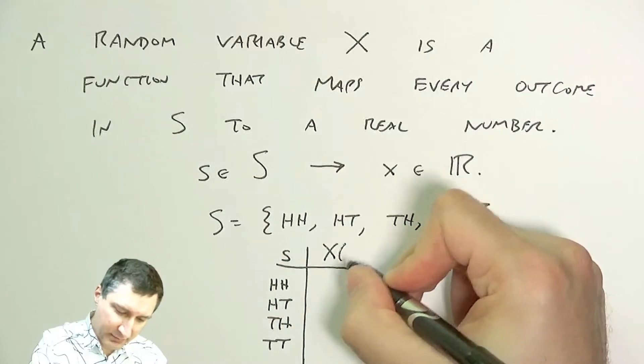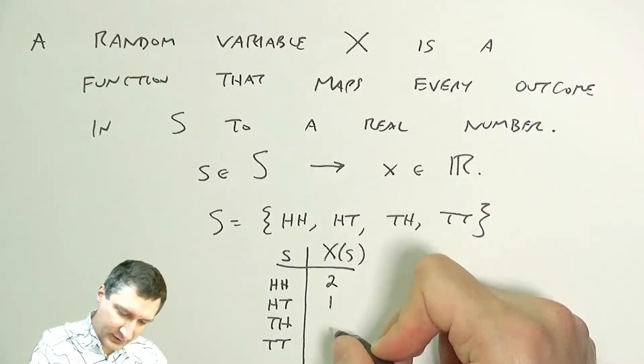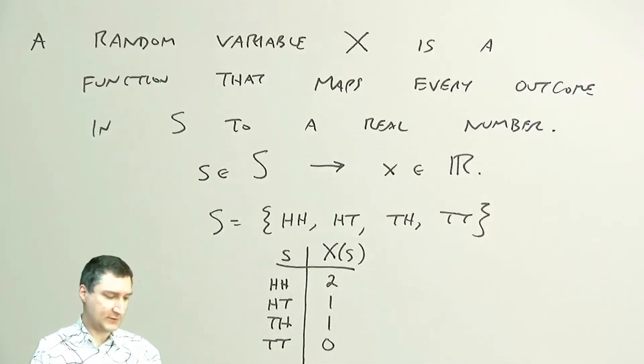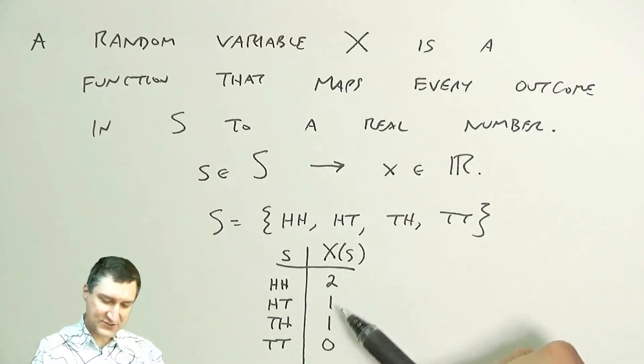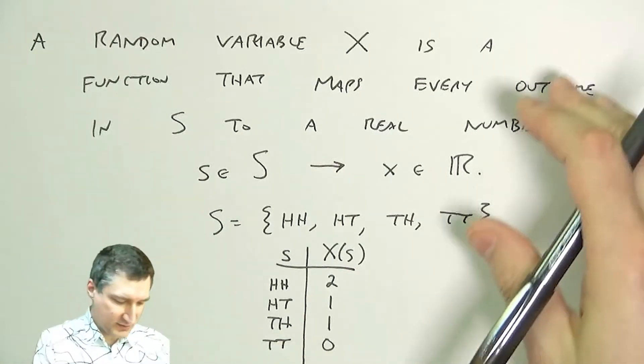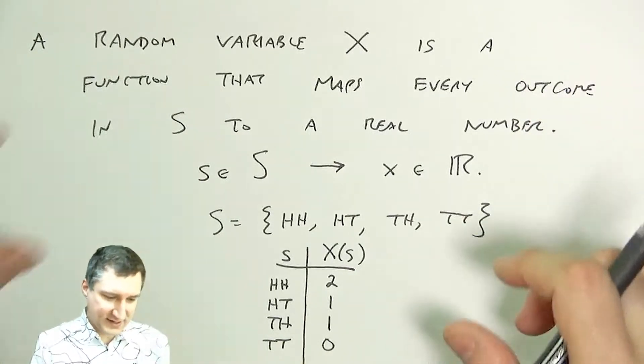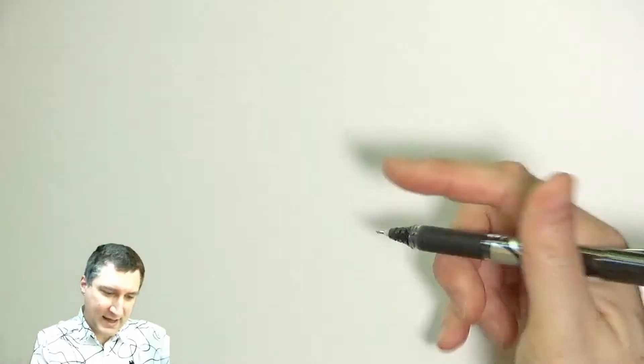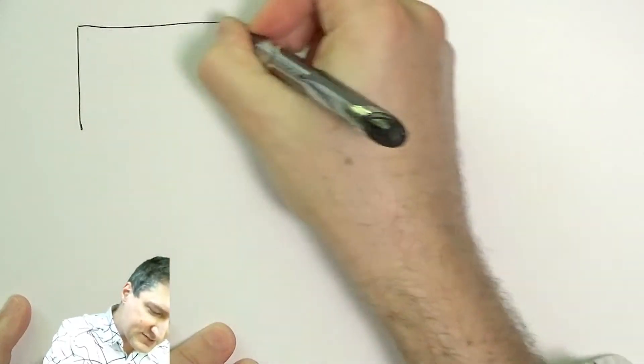And so a discrete random variable is a situation where I have a discrete set of values here for the possible results of the experiment. So just to be super crystal clear, that's like saying I have my kind of generic sample space up here with each of these outcomes.